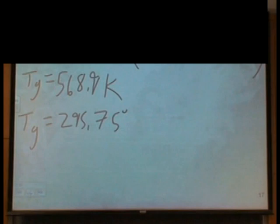So that means T sub G is equal to 568.9 Kelvin. And if we do our temperature changes, we can get T sub G, or our units change is equal to 295.75 degrees C, or 564.35 degrees Fahrenheit.